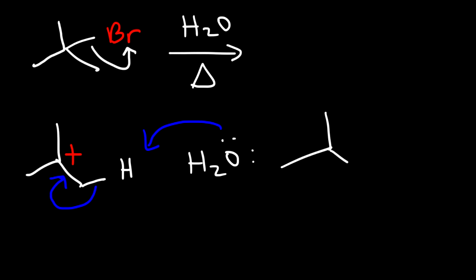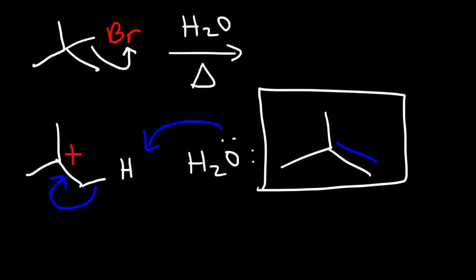And so the product of this reaction looks like this — we have an alkene. That's the basic idea behind the E1 reaction mechanism. It can convert alkyl halides into alkenes.